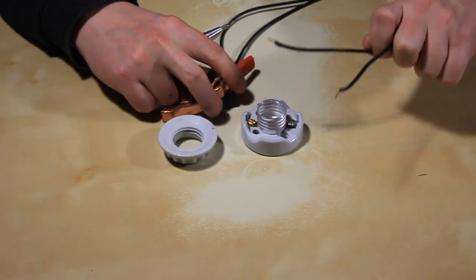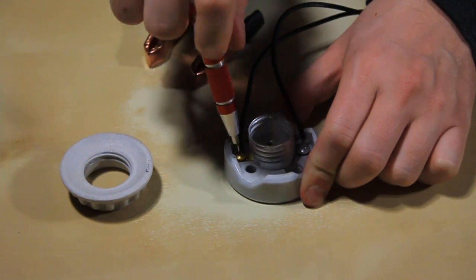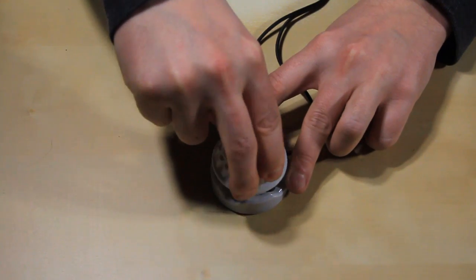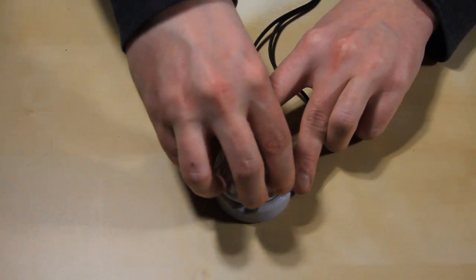First we'll take our alligator clips and wire them into a light bulb fixture, making sure it is snug and secure. Then for safety we'll attach the top panel to protect us from getting shocked.